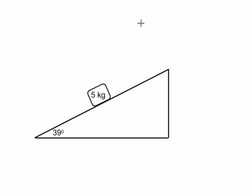This is Dr. Holt. In this video I'm going to talk about how to set up a new axis when you have a mass that's on an incline plane. Here I have a 5 kg mass on an incline plane. It has an angle of 39 degrees off the horizontal.